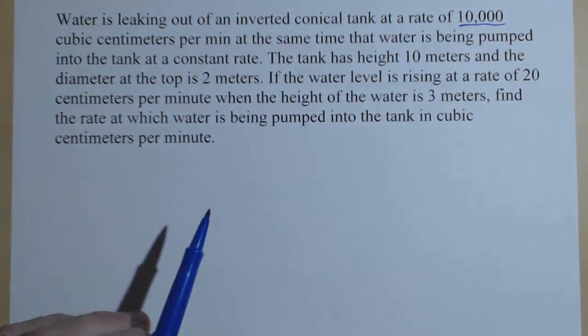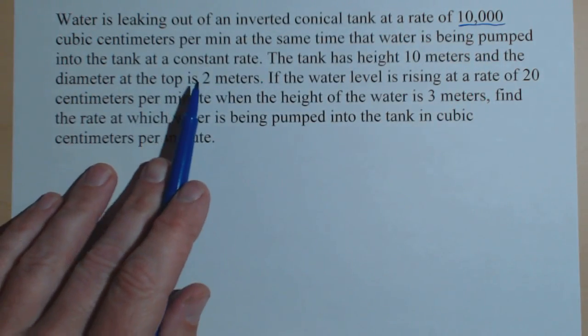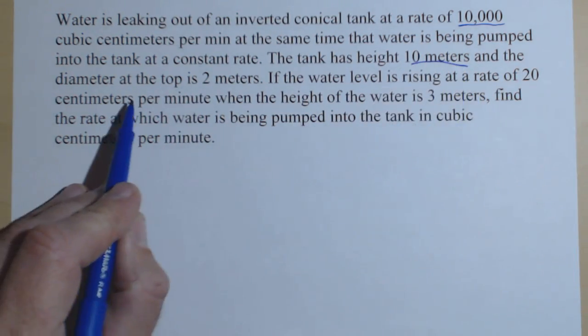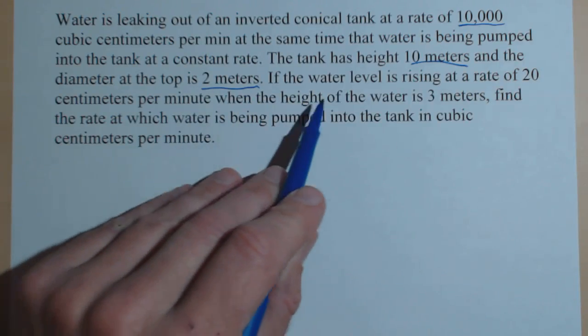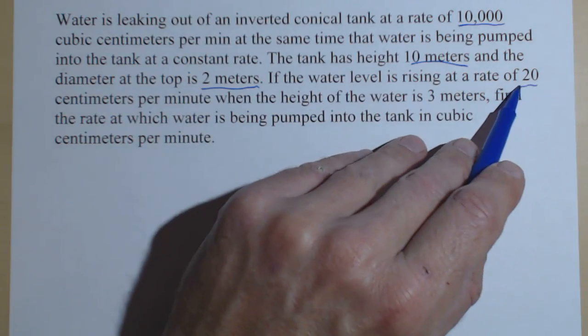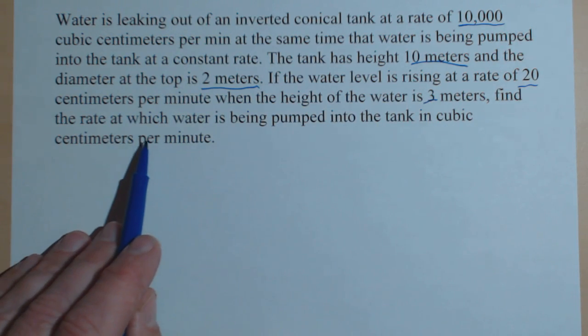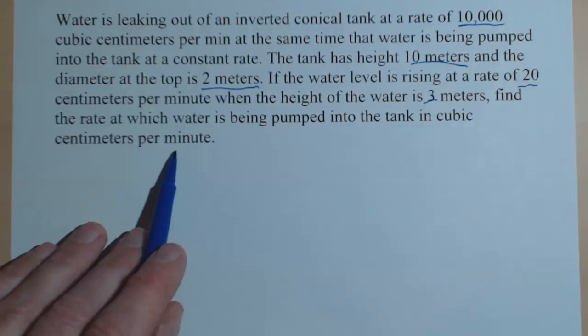So we have our 10,000, that's going to be the rate that it's going out. The tank has a height of 10 meters and the diameter at the top is 2 meters. If the water level is rising at a rate of 20 centimeters per minute when the height of the water is 3 meters, find the rate at which water is being pumped into the tank.